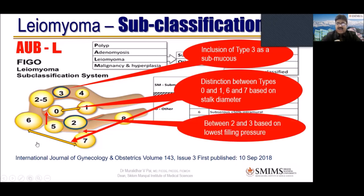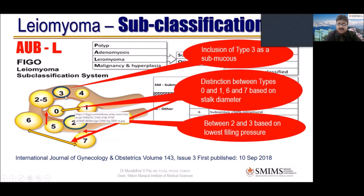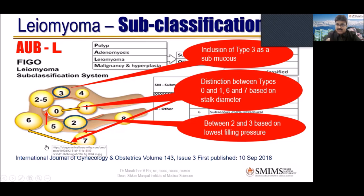Between types 2 and 3, the distinction is based on lowest filling pressure — how much filling defect will be present in the cavity. Type 3 is now categorized under submucous as already mentioned. Similarly, how much filling pressure will be there is determined from the diagram. This is of some academic importance — useful if you want to do studies — though I don't see a big practical importance.